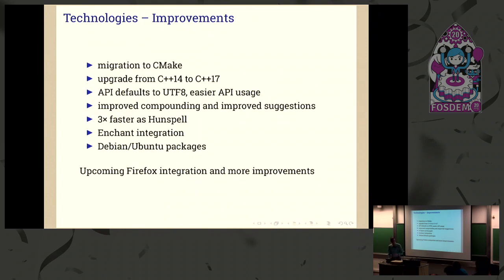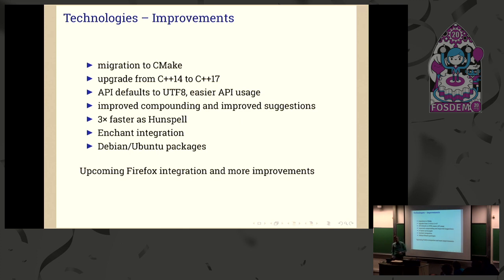The things we changed in version 3: we upgraded to C++17, used CMake to build the library and command line tool. The API is easier — you don't have to tell it which character encoding or locale you're using, it defaults to UTF-8. Compounding and suggestions have been improved. It's now three times as fast compared to HunSpell. We made an Enchant integration, Debian and Ubuntu packages, and Firefox integration is coming up.